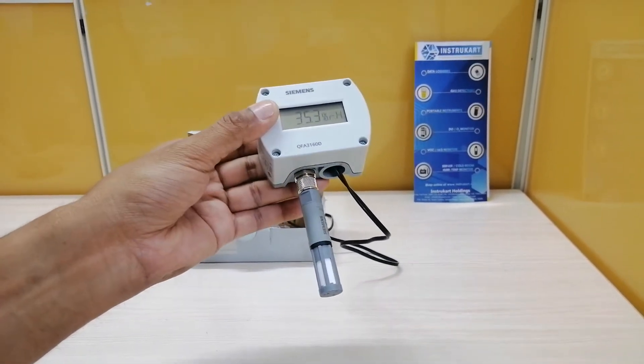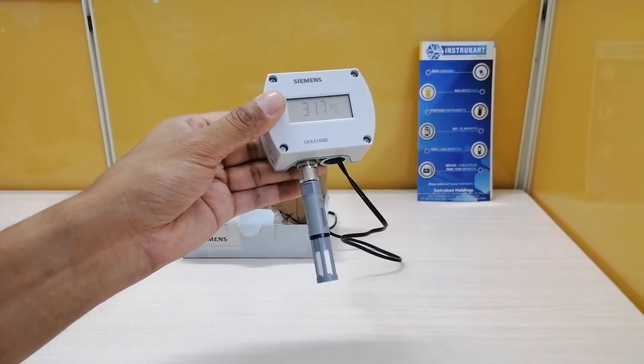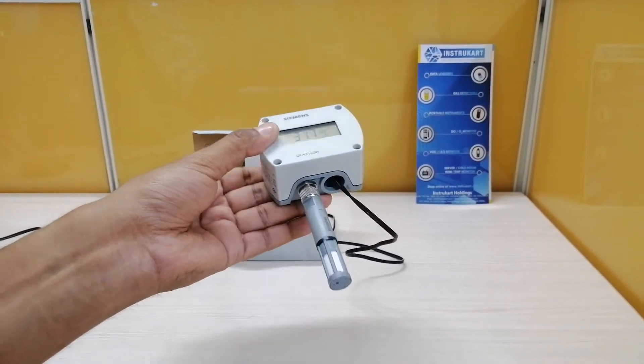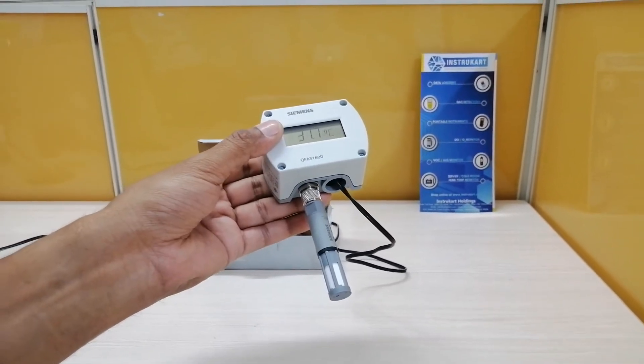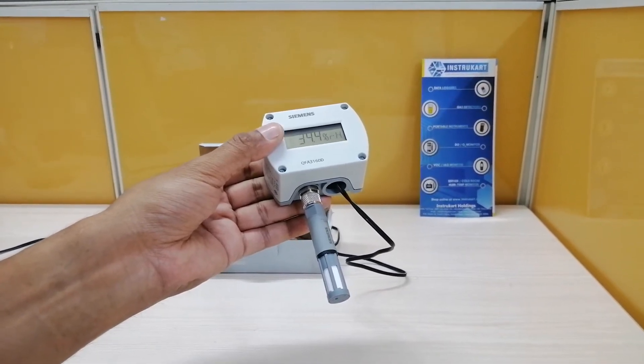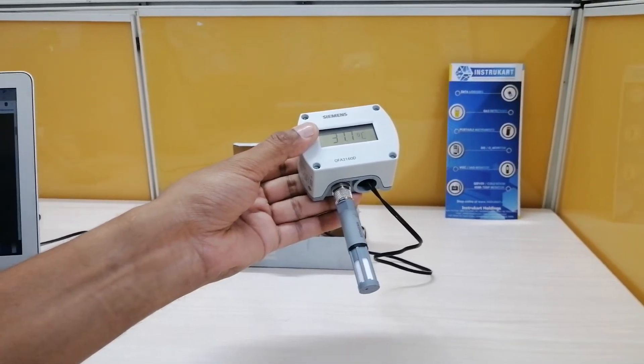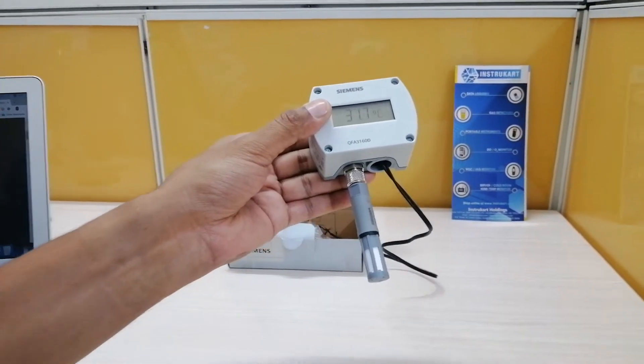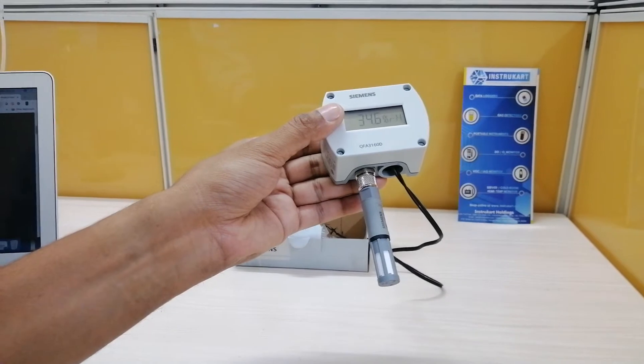These are basically used for ventilation and air conditioning plants where high accuracy and short response time for measuring the humidity is also required. The measuring humidity is 0 to 100 percent and it has a temperature range of 0 to 50 degrees or minus 42 to plus 70 or minus 35 to plus 35.